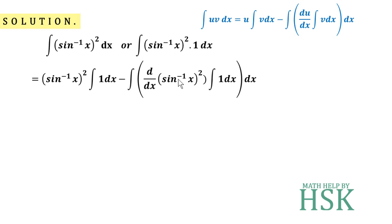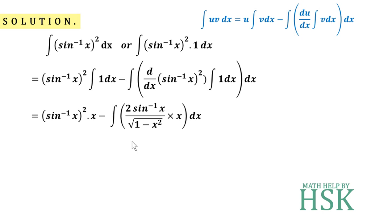The differentiation of (sin⁻¹x)² is done by the chain rule: it equals 2·sin⁻¹x times the differentiation of sin⁻¹x, which is 1/√(1−x²). So on simplification we can write this as (sin⁻¹x)²·x, where the differentiation of (sin⁻¹x)² equals 2·sin⁻¹x·(1/√(1−x²)), and the integration of 1 is x. Now we have to integrate the remaining term to obtain our answer.